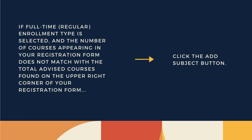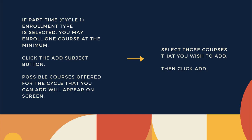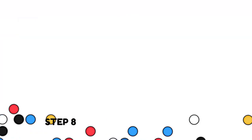Step 7: During cycle 1 registration, if full-time regular enrollment type is selected and the number of courses appearing in your registration form does not match with the total advised courses found under the upper right corner of your registration form, click the Add Subject button. Select those courses that you wish to add, then click Add. If part-time cycle 1 enrollment type is selected, you may enroll one course at the minimum. Click the Add Subject button. Possible courses offered for the cycle that you can add will appear on screen. Select those courses that you wish to add, then click Add.